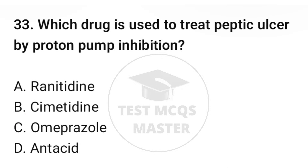Question number thirty-three: which drug is used to treat peptic ulcer as a proton pump inhibitor? The correct option is C: Omeprazole.